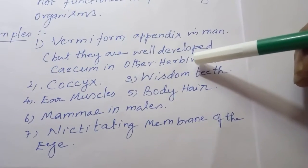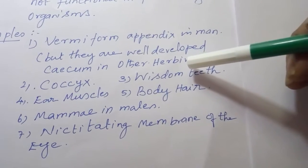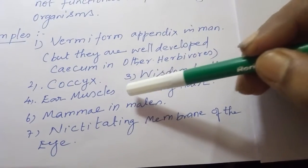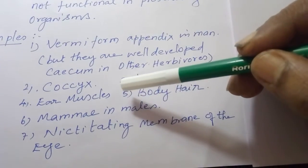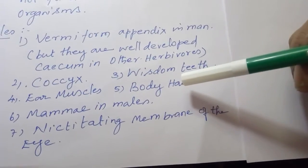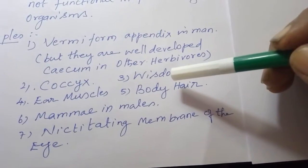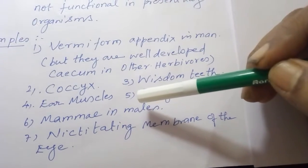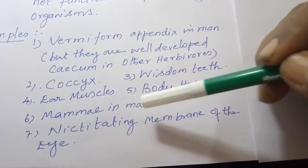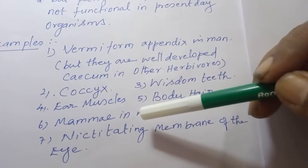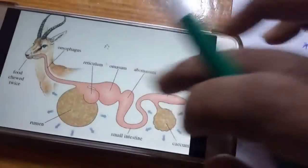Wisdom teeth are not fully coming out of the gum, so they are vestigial. Ear muscles — we are not able to move our pinna like dogs, cats, or cattle. Body hair is far less developed compared to monkeys and other mammals. In males, in place of mammary glands, there is a small circular spot called a mammy, which is also a vestigial organ. The nictitating membrane of the eye is well developed in birds and other vertebrates but not in human beings.